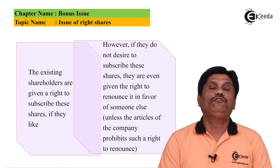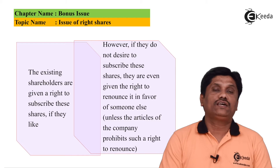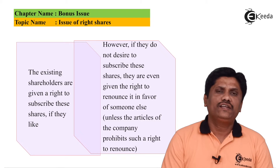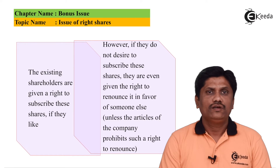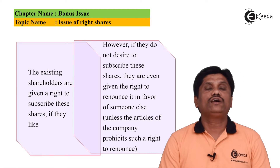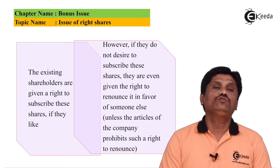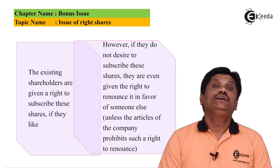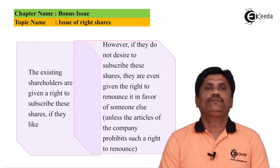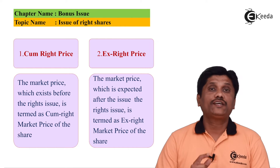So meri right shares ka offer price jo hota hai woh hamesha market price se thoda kam hota hai, toh mein shareholders attract kar sakta hoon so that they will apply for the shares. Jambi shareholders ko right deta hai — is ka matlab yeh compulsion nahi hai, magar unhone ko chaiye toh shares khari denge, nahi chaiye toh nahi khari denge. It is possible that that right can be sold by the shareholder to the other party — right renounce kia ja sakta ya transfer kia ja sakta in the name of a third party.